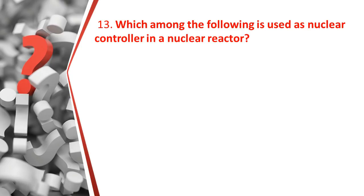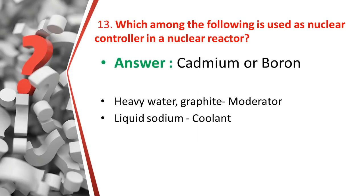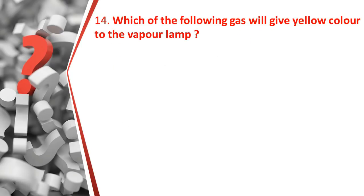The thirteenth question: which of the following is used as a nuclear controller in a nuclear reactor? The answer is cadmium or boron. Related facts: as a moderator we use graphite or heavy water, and as a coolant we use liquid sodium. So the nuclear controller used in a nuclear reactor is cadmium or boron.